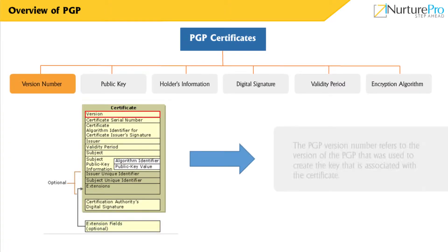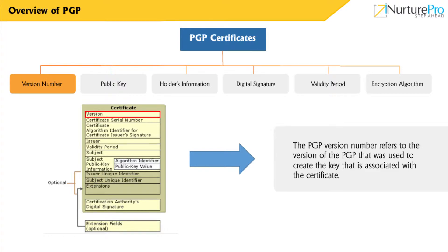Version number: the PGP version number refers to the version of the PGP that was used to create the key that is associated with the certificate.